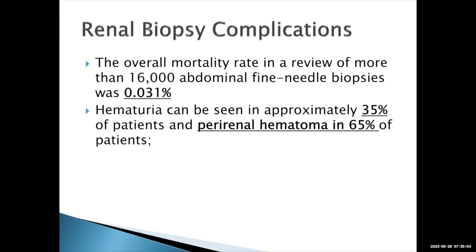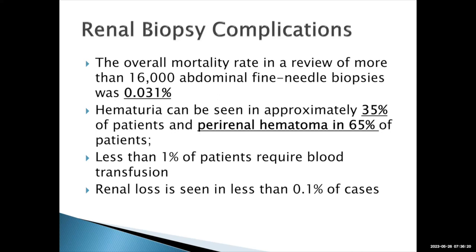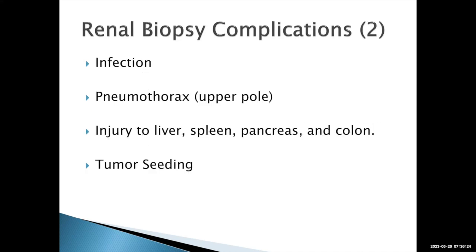Less than 1% of patients will require blood transfusion, and renal loss is seen in less than 0.1% of cases. Other complications include infection, pneumothorax if biopsying an upper pole lesion, and injury to the liver, spleen, pancreas, or colon. For a renal cell carcinoma biopsy, seeding is very rare but possible. It's important to always maintain awareness of surrounding structures.